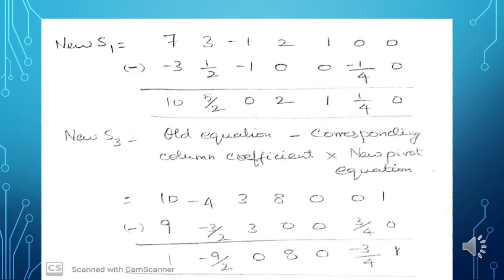New S3 = old S3 minus the corresponding column coefficient (which is 3) times the new pivot equation. Old S3 row: [10, -4, 3, 8, 0, 0, 1]. Minus 3 × [3, -1/2, 1, 0, 0, 1/4, 0] = [9, -3/2, 3, 0, 0, 3/4, 0]. On subtracting, we get new S3 = [1, -5/2, 0, 8, 0, -3/4, 1].